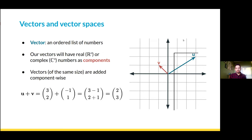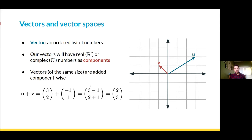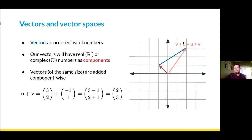Vectors of the same size can be added component-wise. If we want to take vector u and v and take their sum, we just add the components. Three plus negative one becomes two, two plus one becomes three, so the sum u plus v becomes a new vector (2, 3) that can also live in the same geometric space. Graphically, we think about this as adding the vectors tip to tail — we take the first vector u, and at its tip we place the tail of the second vector and we get the sum u+v.